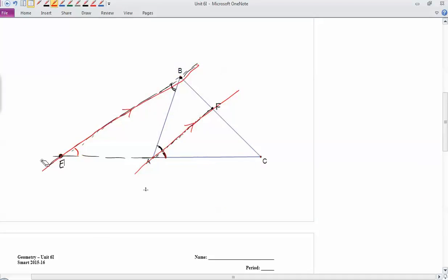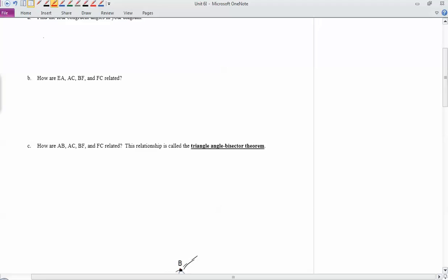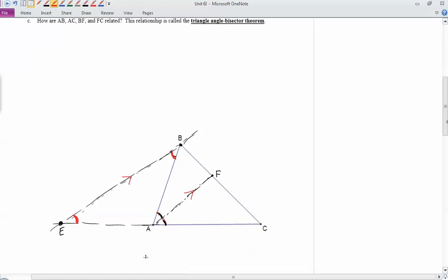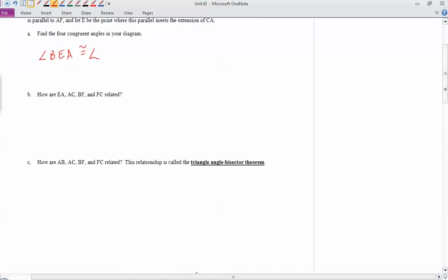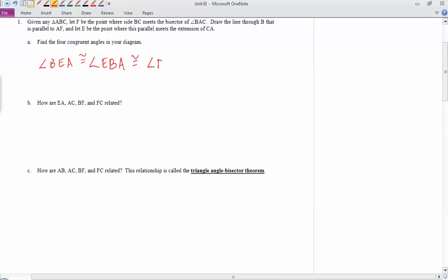Let me get rid of the red lines that I drew in here. So there's this one down here at angle E, there's this one up here at angle EBA, there's this one right here, BAF, and then there's FAC. So let's copy those down. So angle BEA is congruent to angle EBA, which is also congruent to angle BAF and FAC. Alright, so there are four congruent angles.